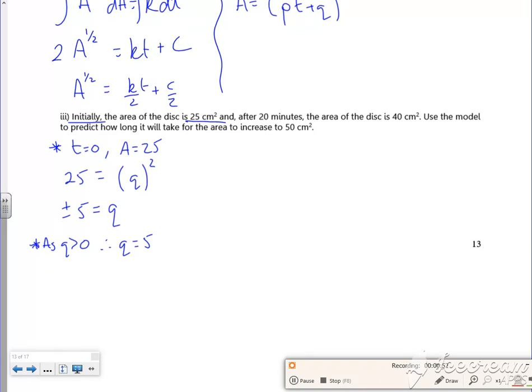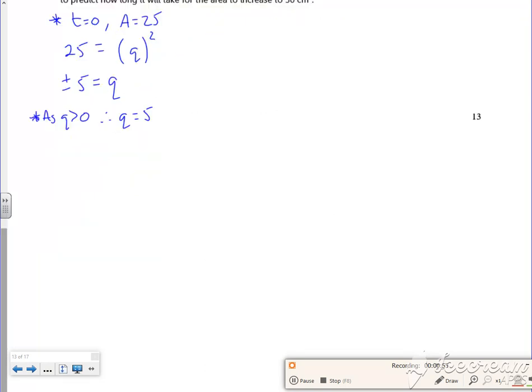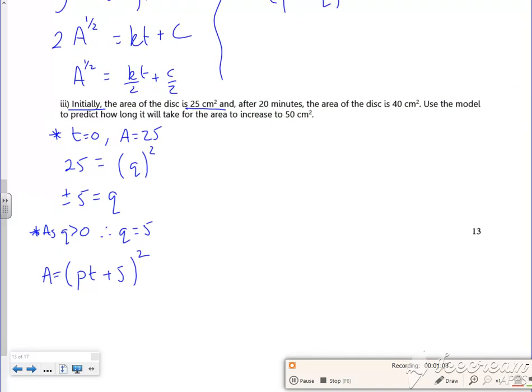Right, so there. So now I'm at a point where A is, so q was 5, wasn't it? So (pt + 5) all squared. And it tells me now that after 20 minutes, it's 40 centimeters squared. So t is 20, and A is 40. So 40 equals p times (20) plus 5, all squared.